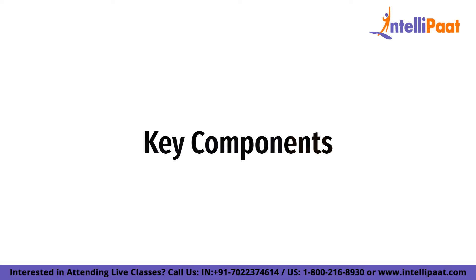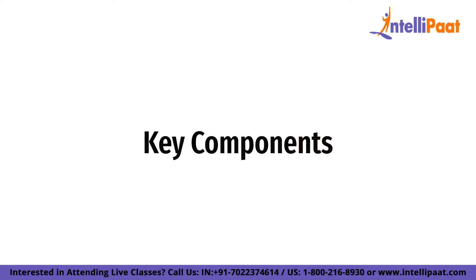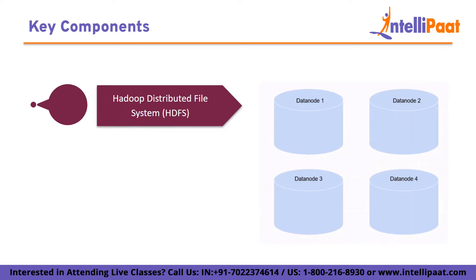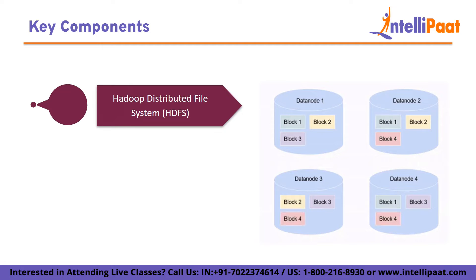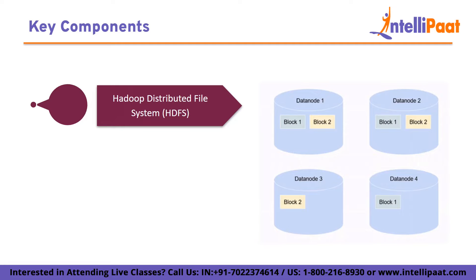Now let's talk about the key components of Hadoop. There are three. Firstly, we have the Hadoop Distributed File System, or HDFS. HDFS is the primary storage component of Hadoop. It is designed to store and manage large data sets across a cluster of machines. HDFS splits large data sets into smaller blocks and distributes them across the nodes in the cluster. It also replicates the data across multiple nodes to ensure fault tolerance. HDFS is optimized for storing and processing large files, such as video files or log files.